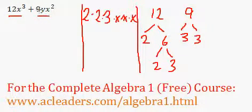And we have 9yx squared, which can be rewritten as 3 times 3 times y times x times x.